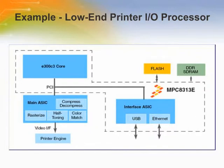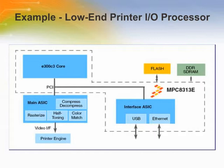This diagram illustrates how the MPC8313E can perform the function of the CPU plus interface ASIC on a low-end printer application. In this application, the CPU interfaces to the main ASIC through the high-speed PCI bus. Low-end multi-function printers are able to share the same platform simply by adding a scanner or fax engine. The interface ASIC provides the various network interfaces used to access the printer. Image data coming through the scanner or fax interface is sent to the main ASIC, which processes the image using algorithms for image compression, decompression and rendering, and then sends it to the printer engine.